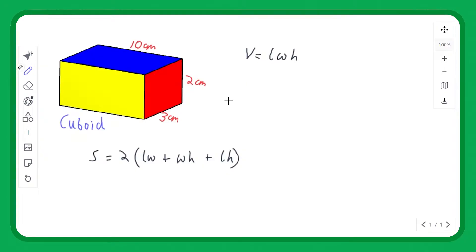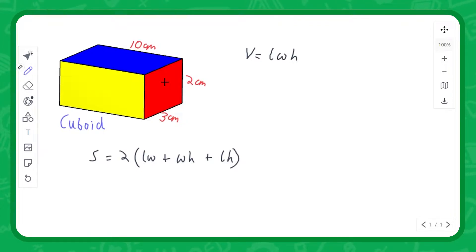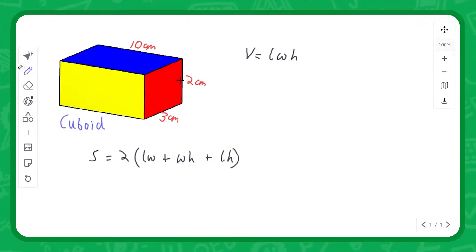Hello everybody. We're going to be looking at three-dimensional shapes — volume and surface area of a selection of 3D shapes. This is extremely important in all forms of construction, going back thousands of years to ancient buildings like the Great Pyramid and the Great Wall of China. Skyscrapers today are basically just giant cuboids. If you're going to see how much glass you need for the windows, that would be the surface area. If you're trying to see how much space you can fit in a container, that's volume. We're going to be looking at how to calculate these things today.